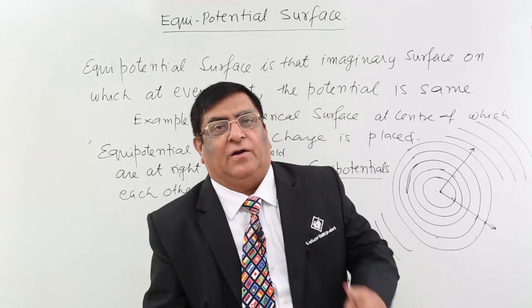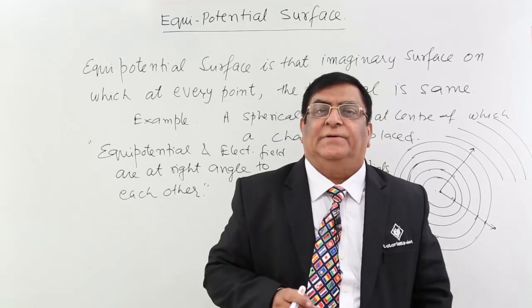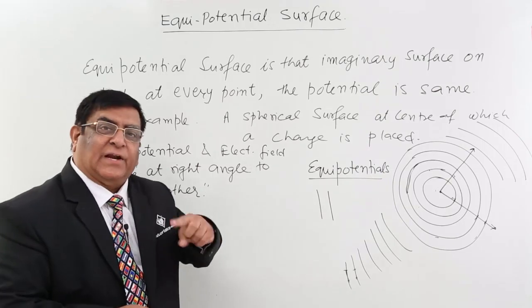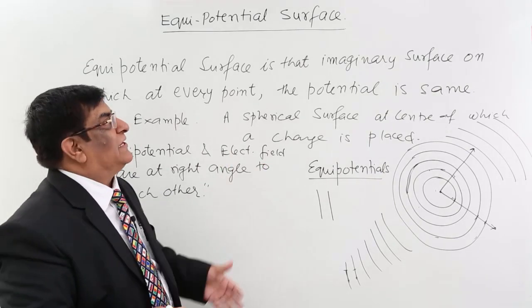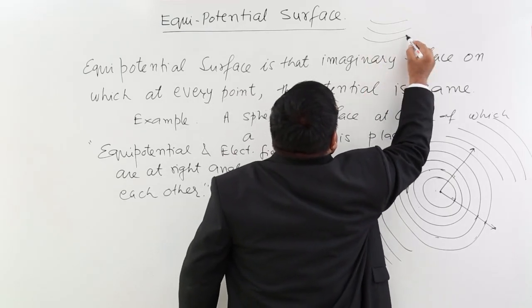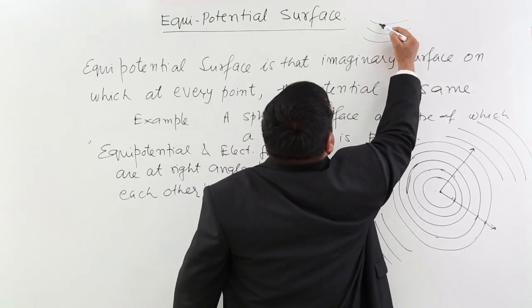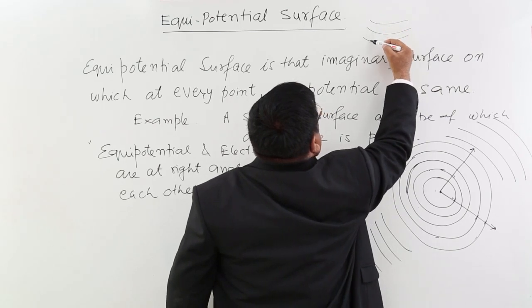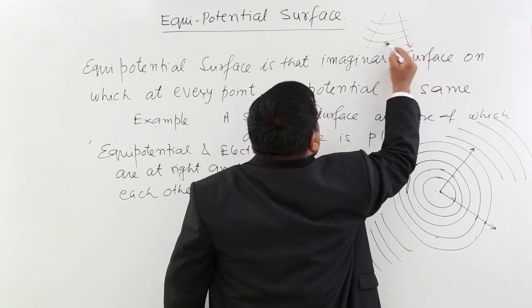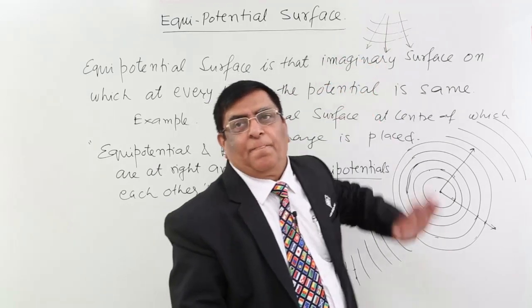Equipotentials are always at right angles to the electric field, and this helps us find the direction of equipotentials. Vice versa, if the equipotential lines are given, the electric field direction is always normal to them — radially outward from those lines.